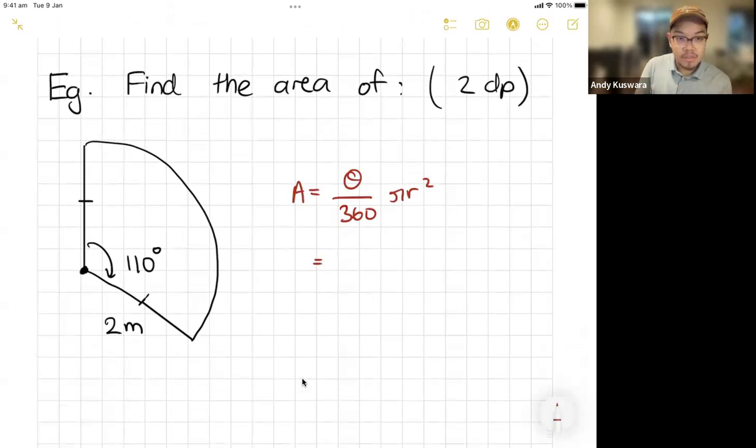What's my angle that's given for this particular part of the circle. I have 110 degrees out of my total 360. I've got my pi, I've got my radius, which in this case is two.